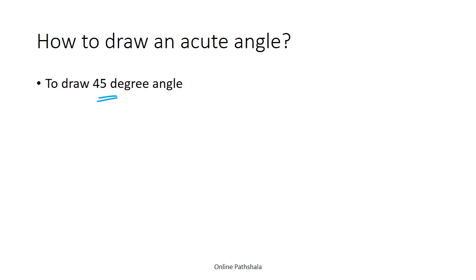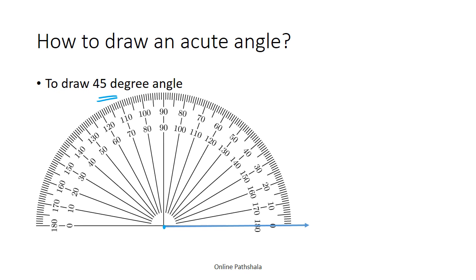Step one is to draw a horizontal line. Step two is to put the center of the protractor on one of the points — place the protractor upside down over this point. Now we start measuring the angle: 10, 20, 30, 40, and this is the 45 degree mark. The next step is to join both lines from the center to this point.